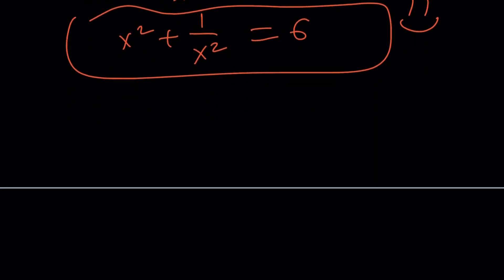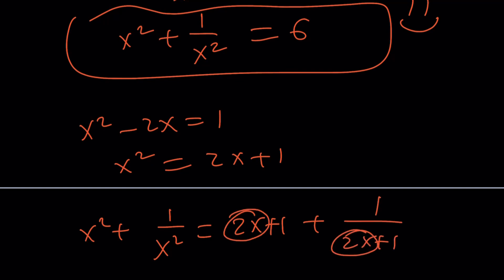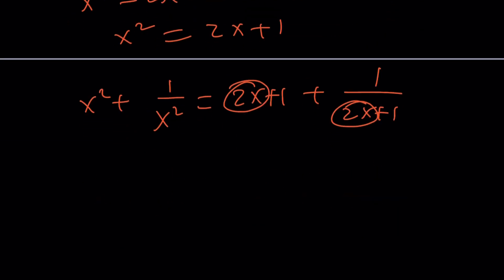What could be a third approach for this problem? We could probably isolate x squared. And then in this expression, we could just replace x squared with 2x plus 1. And then make a common denominator. You're going to get x squared again. And then it's going to give you the answer at the end.